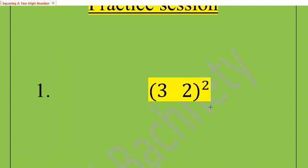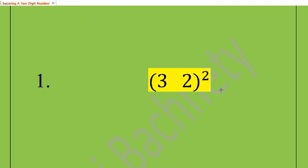So 32 square. Think by yourself. What will be the answer? 4 seconds. So the answer is 1024. Is it correct? Check. 1024. 2 square is 4. 3 times 2 is 6. Double of 6 is 12. 2. 1 carried forward. 3 square is 9. 9 plus 1 is 10. 1024. Perfectly correct answer.